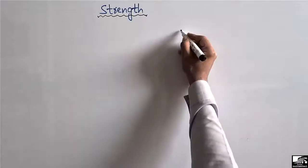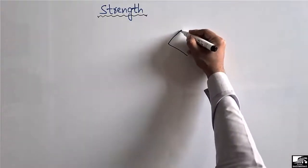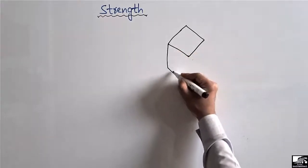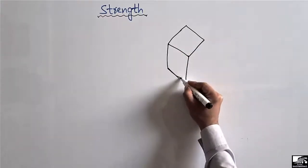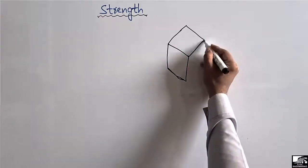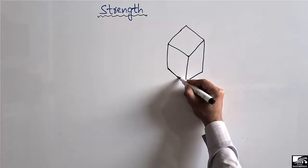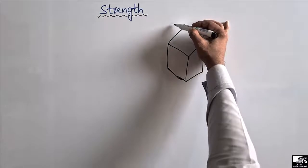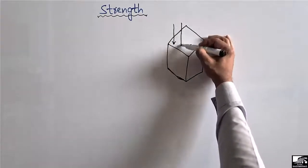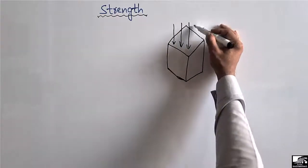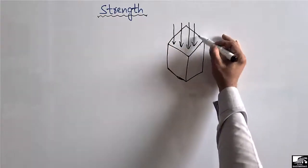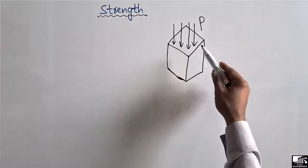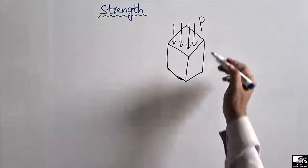Let's consider that this is a tube, and this tube is made of concrete. I took this tube as an example in order to explain strength. This tube has been exposed to an external load of magnitude P, so there is an external load acting on this tube.